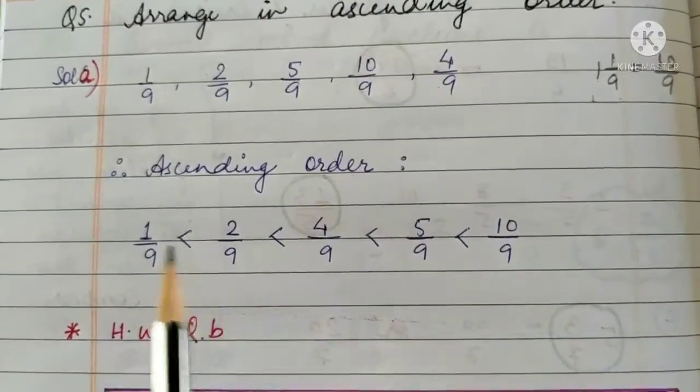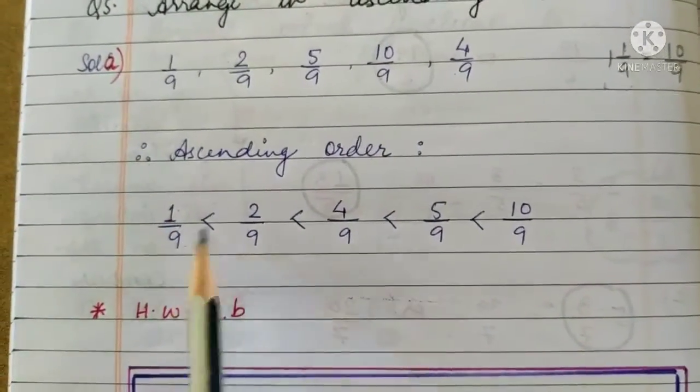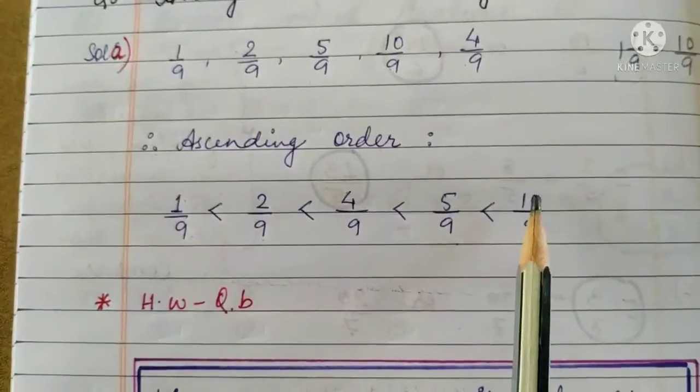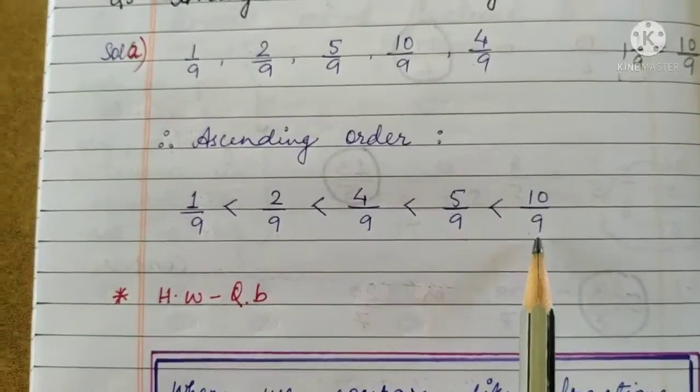that is from small to big. We have 1 by 9, 2 by 9, 4 by 9, 5 by 9 and 10 by 9.